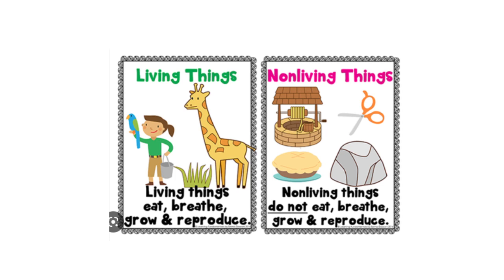What do we mean by the word living things? Living things are things that eat, breathe, grow and reproduce. When you take a look at this picture, these are living things. As you can see, animals are living things, plants are living things, and humans are living things. Why do we consider these things living things? Because animals, plants and humans, they all eat, they all breathe, they all grow and they all reproduce.